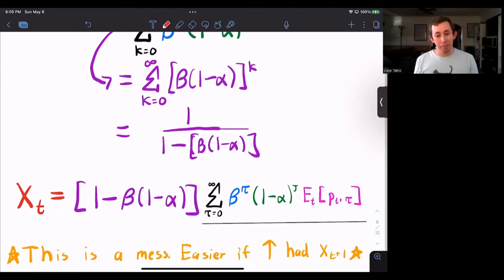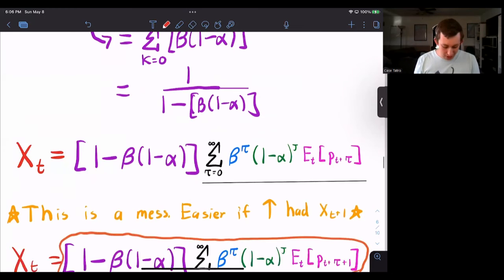All right, well, this is a grand old mess. It would be easier if I could write my optimal price today as some function of my expected optimal price tomorrow. So that's what I'm going to try and do.